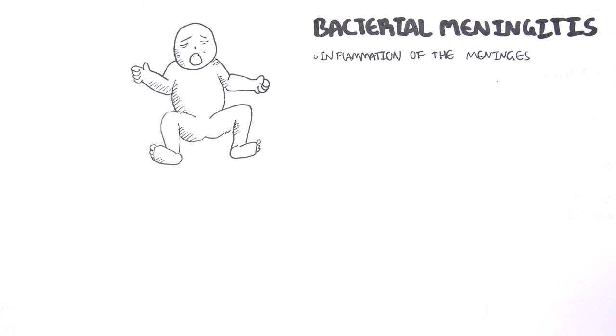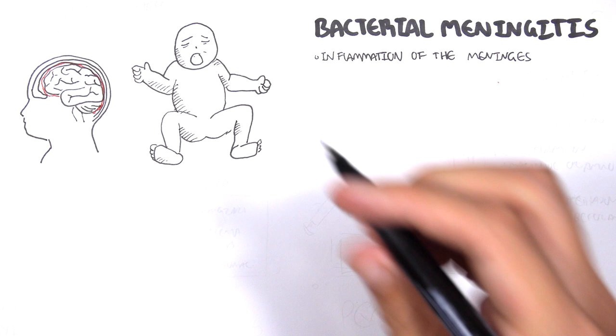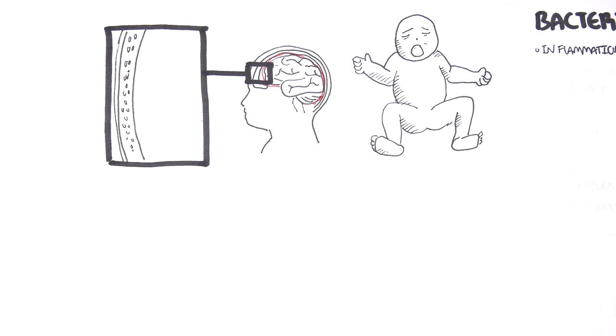The meninges are layers of protective sheaths that cover the brain. The brain is covered by many layers because it is so important and needs protection. From the outside superficially we have the scalp which includes the skin and fat. Below the scalp we have the bone, the skull itself.